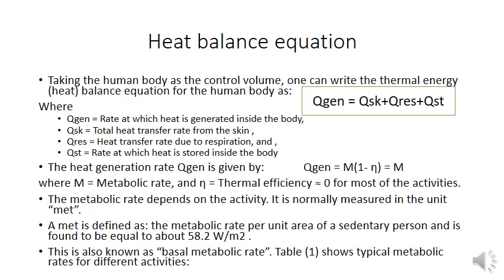Q_gen can also be expressed in terms of metabolic rate: Q_gen = M × (1 − η), where M is the metabolic rate and η is the thermal efficiency — which is mostly zero for maximum day-to-day routine activities, so Q_gen equals the metabolic rate. The metabolic rate depends on activity and is measured in the unit 'met'. One met is defined as the metabolic rate per unit area, equal to 58.2 W/m², also known as the basic metabolic rate.